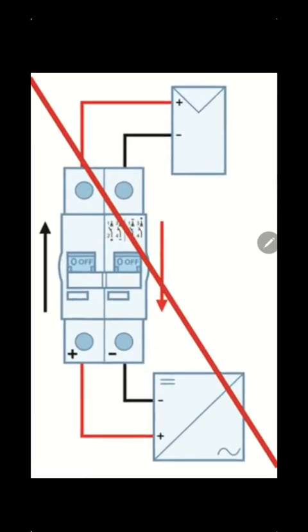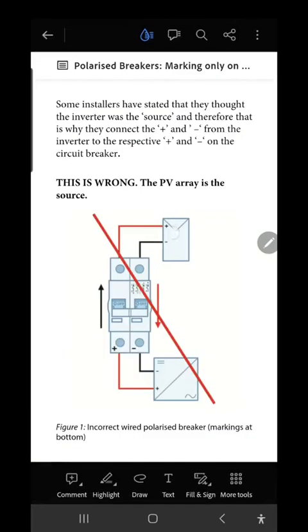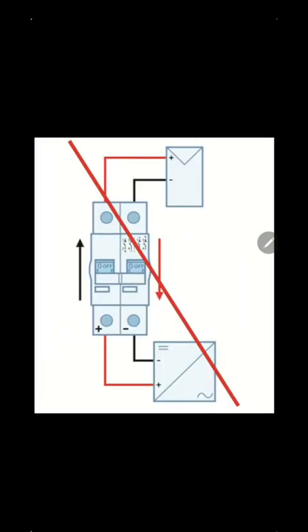The source is also important. The flow has to be from the source. Your source is your PV or your battery when you put it between your battery and your inverter. But you're never going to use a polarized breaker between your battery and inverter. We sell non-polarized breakers - you get 80 amps, 100 amps, or 125 amps that you can use.